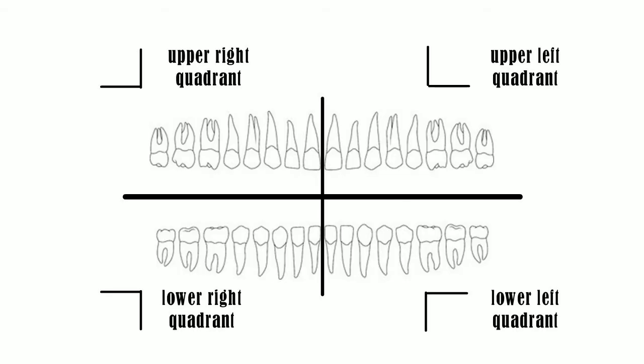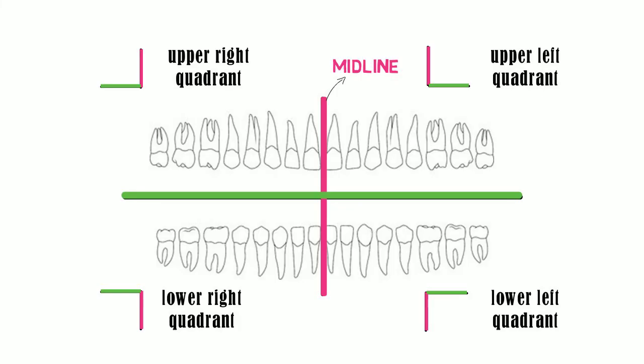In this symbol, the vertical line depicts the midline of the jaws and the horizontal line, the occlusal plane. The counting in each quadrant starts from the midline and moves posteriorly.